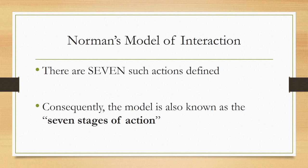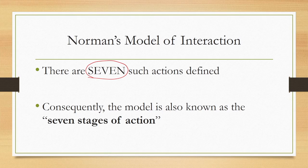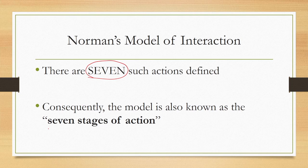To be precise, the model talks of seven such actions covering the cognitive as well as sensory-motor activities of the user while interacting with a graphical user interface. Because there are seven actions, the model is also often called the Seven Stages of Action. We can call it either the Model of Interaction or Seven Stages of Action — both refer to the same model.